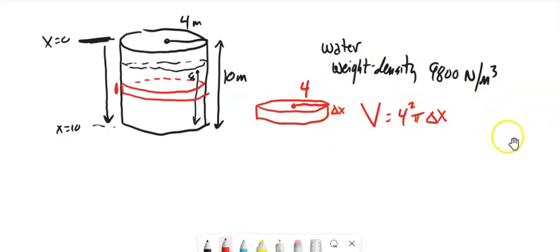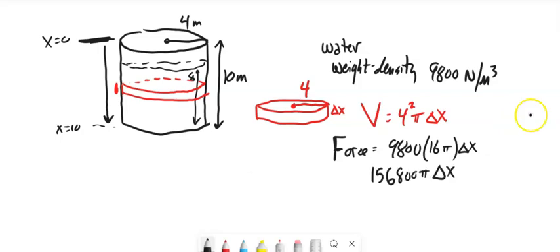The force is the water density times the volume: F = 9800 × 16πΔx = 156800πΔx. The work for one layer is force times distance. The distance is x, so work is 156800πx Δx times that change in x.